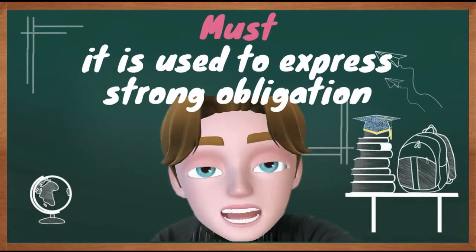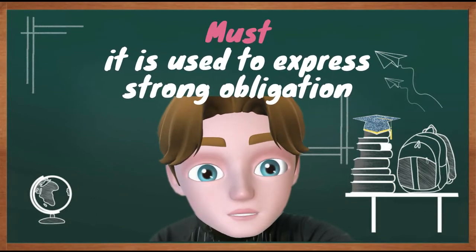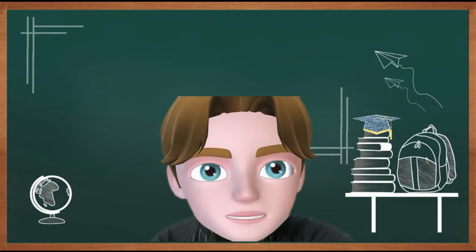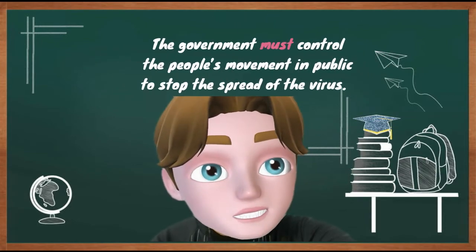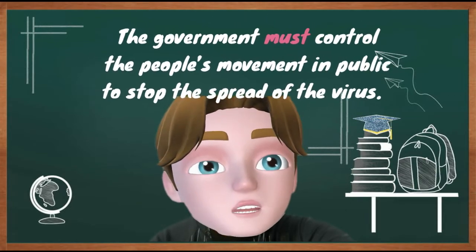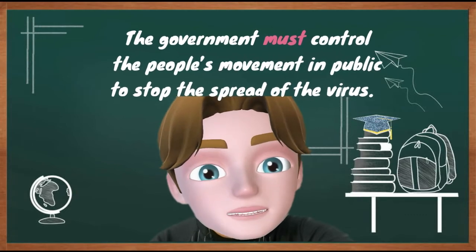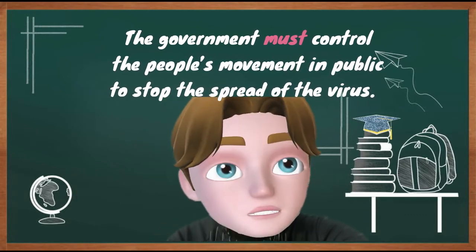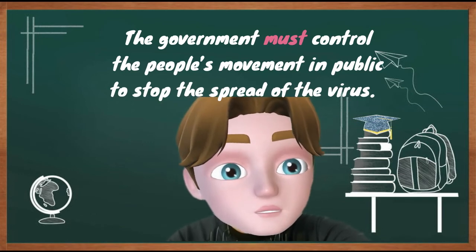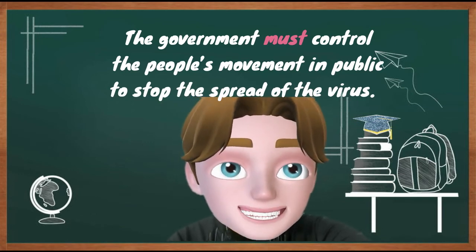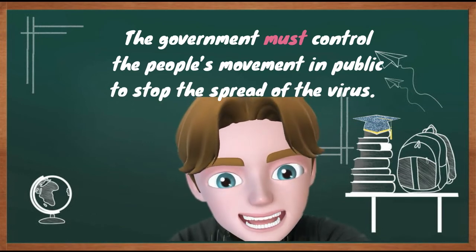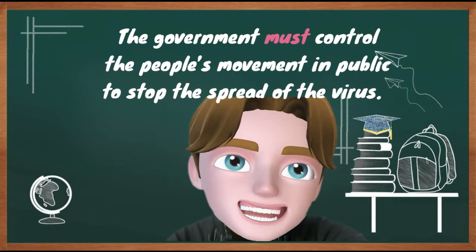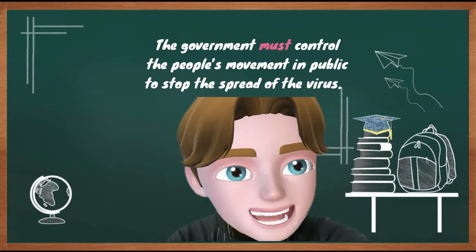And number five, 'must': it is used to express strong obligation. Example: The government must control the people's movement in public to stop the spread of the virus. The modal 'must' is used to express the strong obligation of the government in taking action against the spread of the virus.